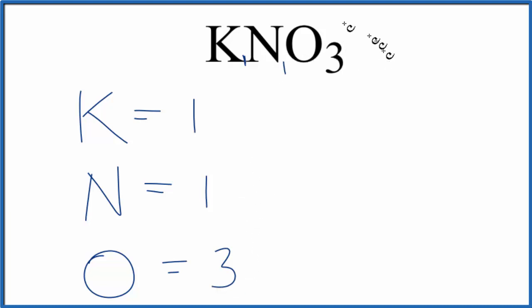To figure out the total number of atoms in KNO3, three plus one, that's four, plus one is five. So there's five total atoms in potassium nitrate.